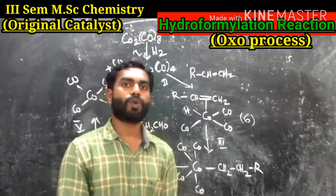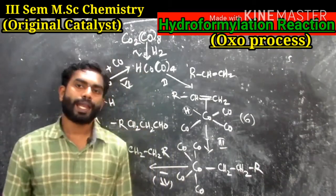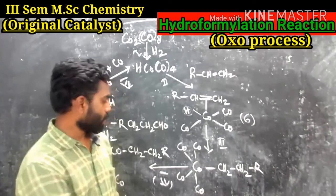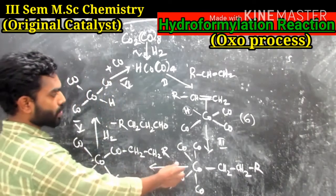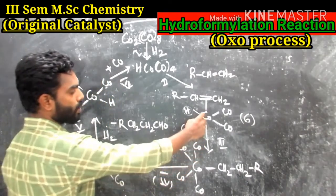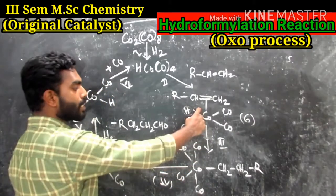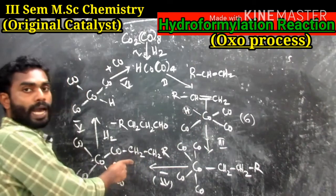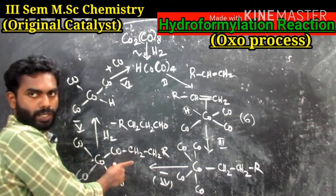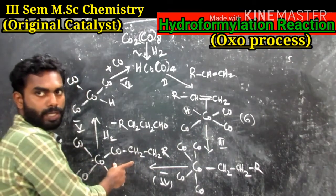Step 4 is another insertion reaction — specifically, CO insertion (carbonyl insertion) into the metal–alkyl bond to give an acyl intermediate.